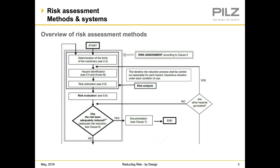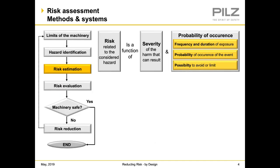After identifying our hazards, we do our risk estimation. We determine: are we willing to accept this risk, or do we need to do some kind of risk reduction? We do the evaluation and estimation together, and if we determine risk reduction is needed, we go through the hierarchy of controls. For risk estimation, we look at key factors: the severity of harm — how badly could you get hurt — and the probability of occurrence: how often are you exposed, what's the duration, what's the likelihood of the hazardous event, and is there a possibility to avoid it?